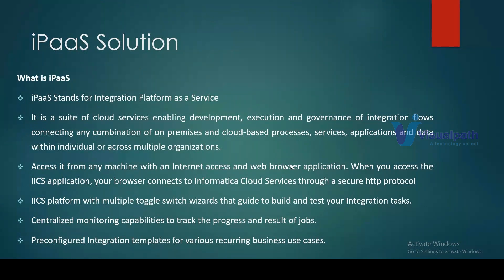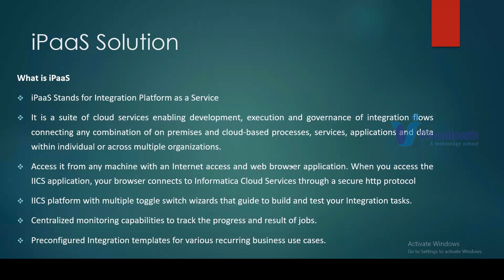The best part of iPaaS is you can access it from any machine with internet access and a web browser. When you access the Informatica Cloud application, your browser connects to the Informatica Cloud services through a secure HTTP protocol. The solution has centralized monitoring capability and a toggle switch to switch between multiple services — you can trigger jobs, monitor jobs, do data integration, and perform the ETL process. There are also pre-configured integration templates for recurring business use cases.